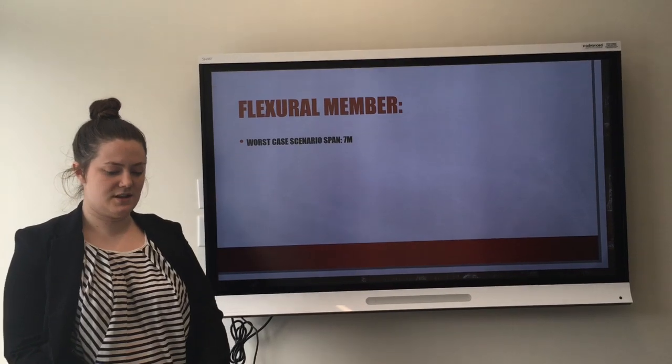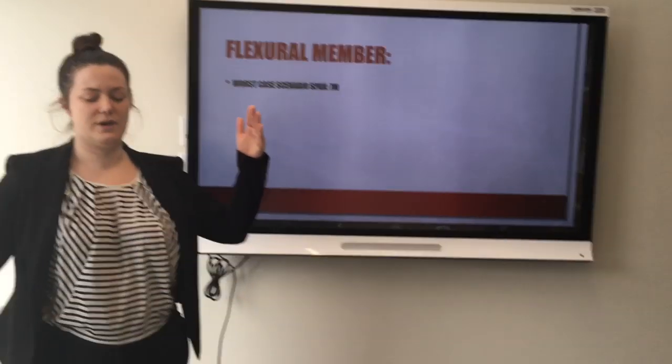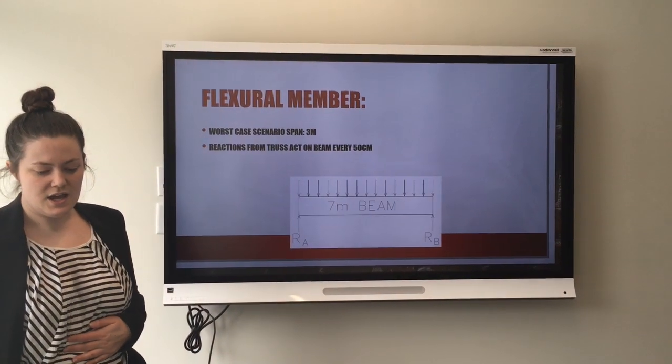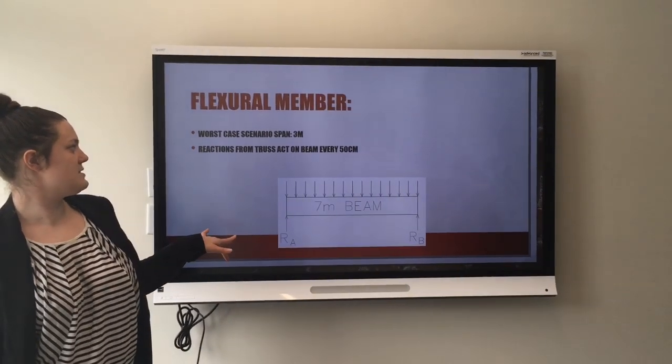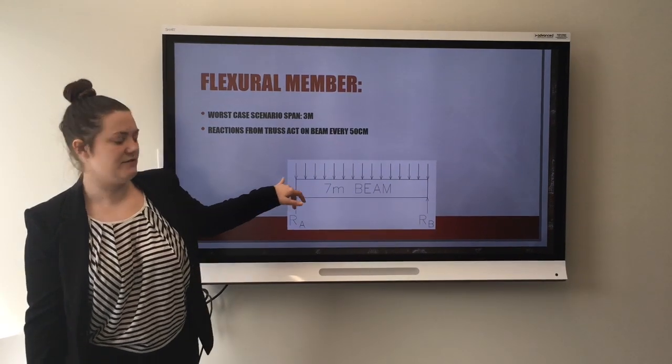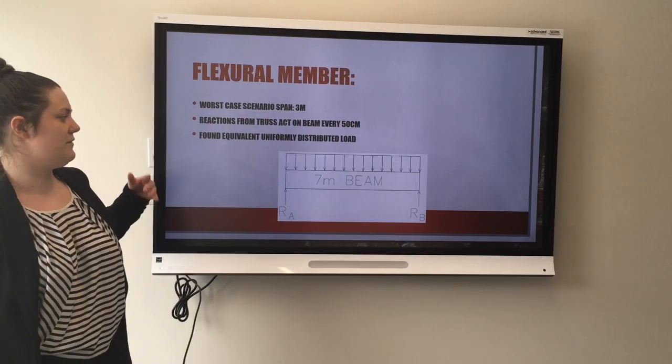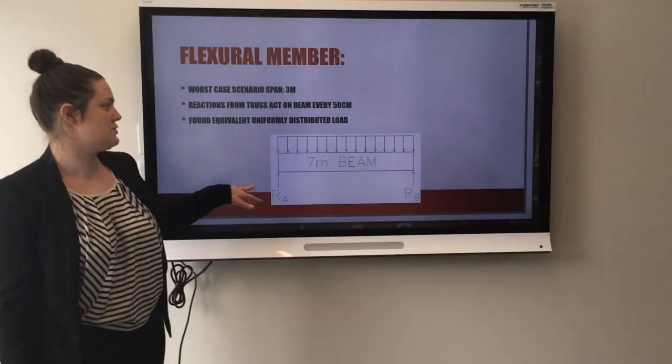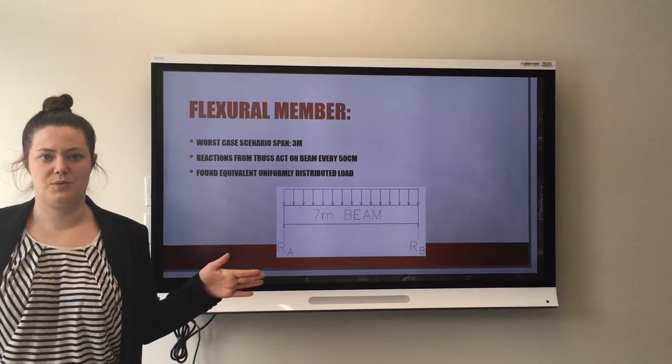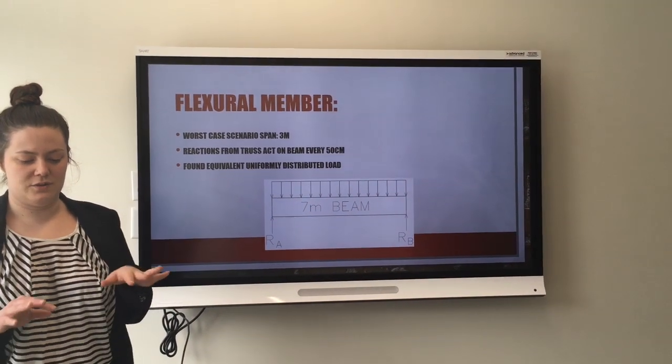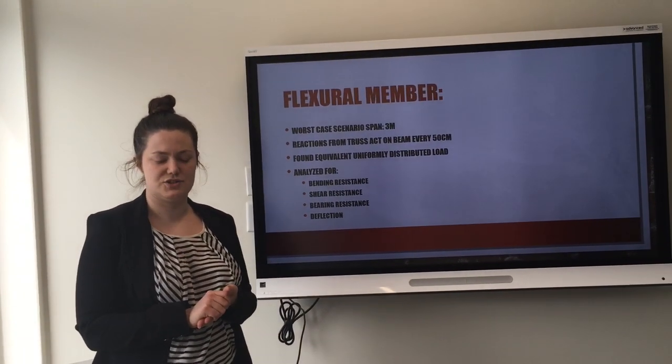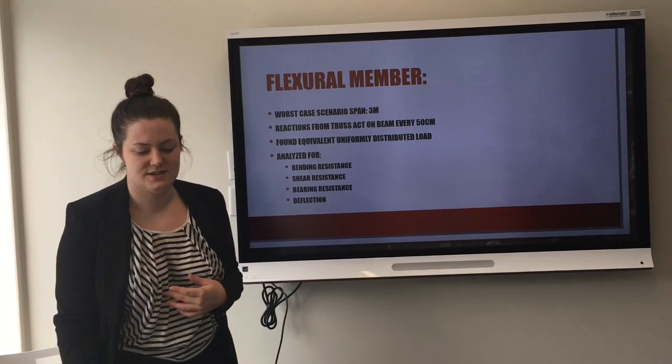The truss loads then act down onto a beam, the flexural member. The worst case span for our beams is 7 meters. The reactions from the truss were applied to the beam as point loads first, every 50 centimeters, and then we found the equivalent uniformly distributed load of those, and treated the beam as a simply supported beam with one uniformly distributed load acting on top of it. The beam was analyzed for bending resistance, shear resistance, bearing resistance, and deflection.